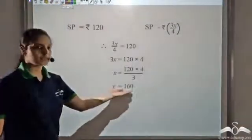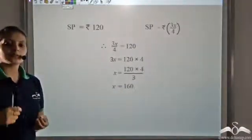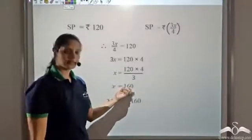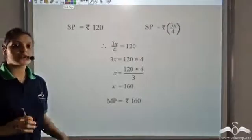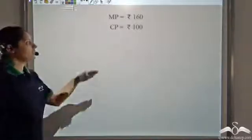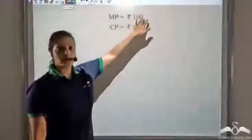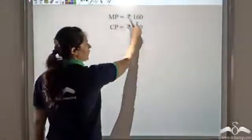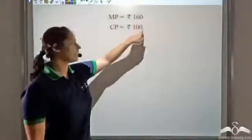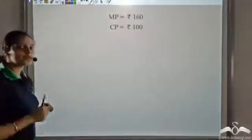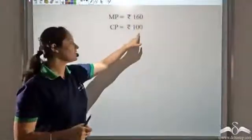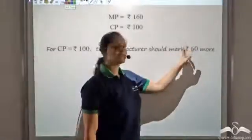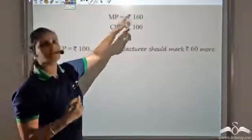So X equals 160. Now, X was the marked price we had assumed. So the marked price is Rs. 160. The cost price we had assumed was 100. So when the cost price is 100, the marked price is 160. The difference between these two is 60 rupees. So he has marked up by 60 for every 100, meaning the marked price is 60 more than the cost price.